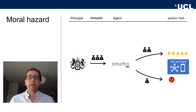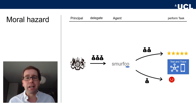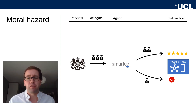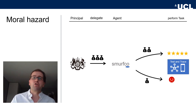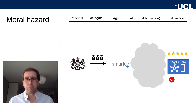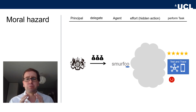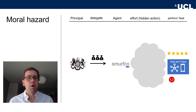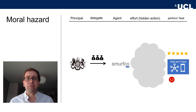Obviously, if the government was able to directly observe this, there wouldn't be a problem. But the government had to delegate the task specifically because of this lack of information and the inability to perform this task themselves. So of course they cannot actually observe the effort that the agent exerts. This is the core of the problem — this is the information asymmetry. The agent knows how much they have spent, what quality of people they hired, what kind of system they set up. But the government cannot directly observe all of this. This is the hidden action.